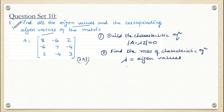How many eigenvalues will there be? It depends on the order of the matrix. Since this is a 3×3 matrix, we will have 3 roots of the given equation — that means 3 eigenvalues. Those eigenvalues can be the same or distinct. In this class, we have taken an example where the roots of the characteristic equation will be distinct — meaning all eigenvalues will be different.